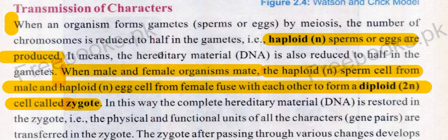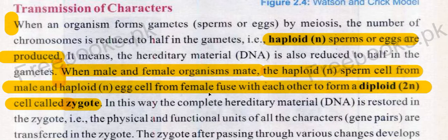When male and female organisms mate, the haploid sperm cells from the male and the haploid egg cells from the female fuse with each other.